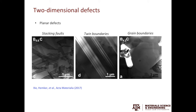We'll talk more about stacking faults and twin boundaries when we discuss dislocations in FCC crystals. The third type is the most common one: grain boundaries. All the lines you see here in this TEM micrograph are grain boundaries. The presence of grain boundaries will hinder the free movement of dislocations, and again, we'll discuss this in a later video.